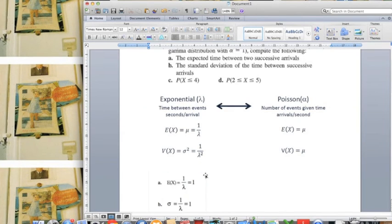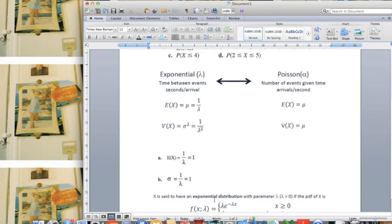So part A and part B is quite simple. The expected value is 1 over lambda, 1 over 1, which is 1. And since the variance is 1 over lambda squared, so the standard deviation is square root of 1 over lambda squared, which is 1 over lambda, which is also 1.